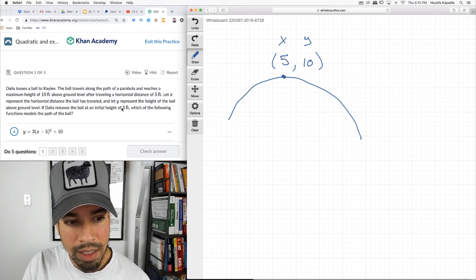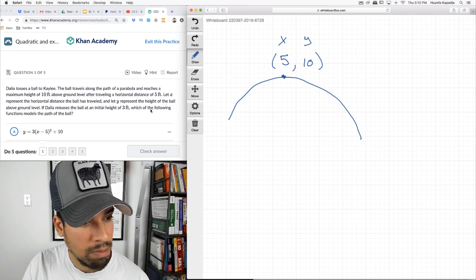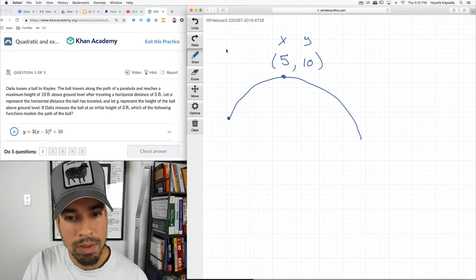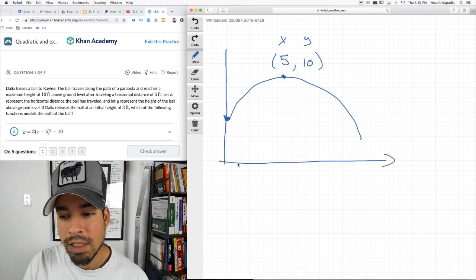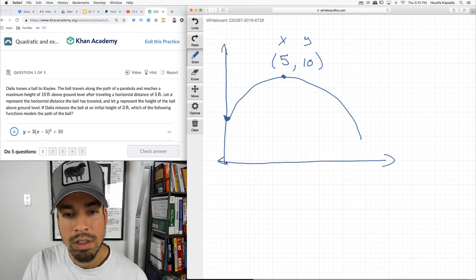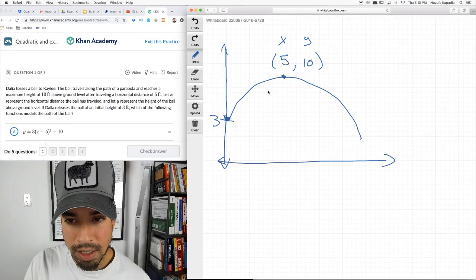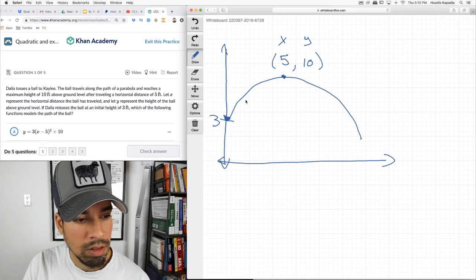And this is the height. So there's my coordinate of the vertex (5, 10). If Dahlia releases the ball at an initial height of 3 feet, which of the following function models the path of the ball? So here's my X axis, here's my Y axis. This is 3, right? Not that you need to draw this, but just to give you an idea.